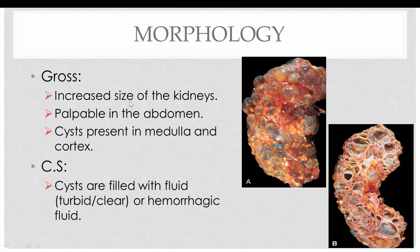The gross picture reveals an increased size of the kidneys due to the presence of multiple cysts, making the kidneys palpable in the abdomen. The cysts are present in both the medulla and the cortex. As seen here, there are multiple cysts on the surface and in the cut section of the kidney, filled with fluid that can be either clear or turbid. The turbidity is due to the presence of necrotic cells.